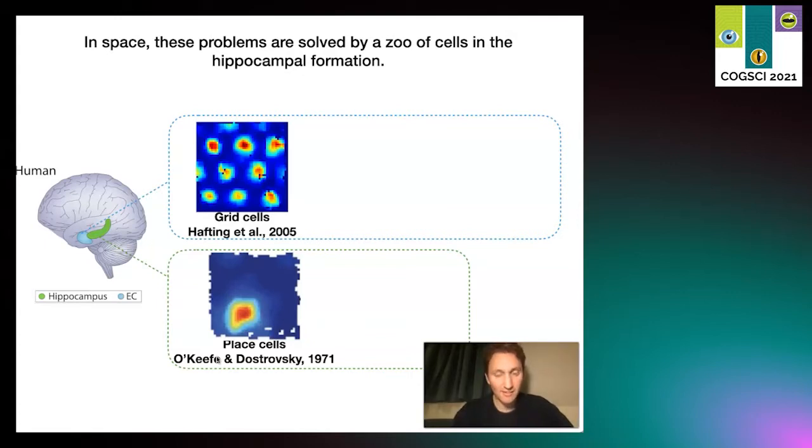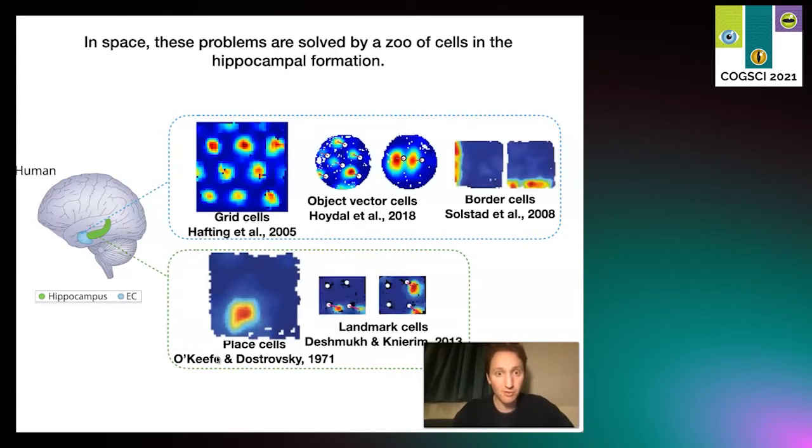Grid cells don't fire in just one location but fire in lots of locations that lie on a triangular lattice, hence why it's called a grid cell. There are also lots of other cells in this brain region that code for space, like object vector cells which always fire a certain distance and angle from objects, or border cells that fire at various borders. In hippocampus you see landmark cells which look like object vector cells but don't fire for every object.